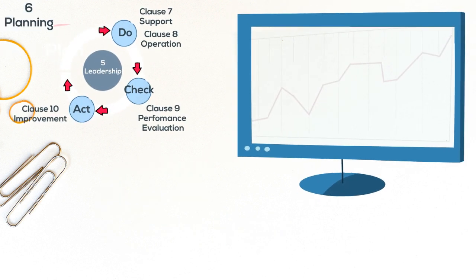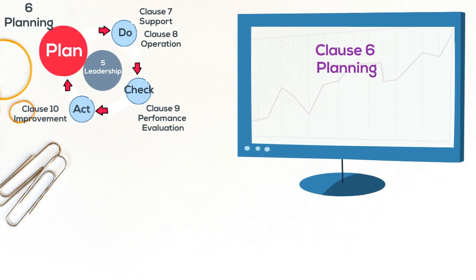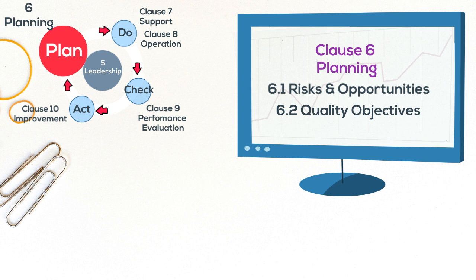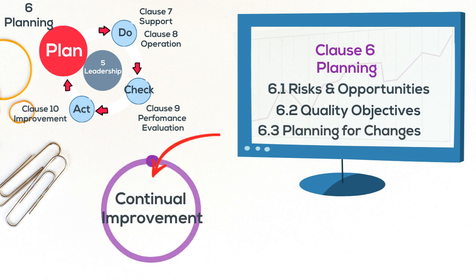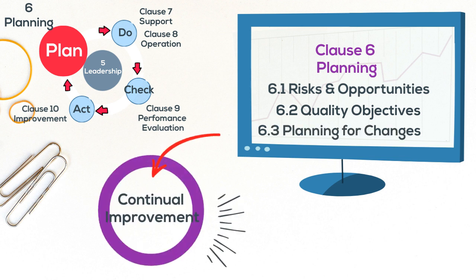The next level of planning is to identify and address risks and opportunities of the QMS, including setting and planning for quality objectives and changes to support continual improvement.